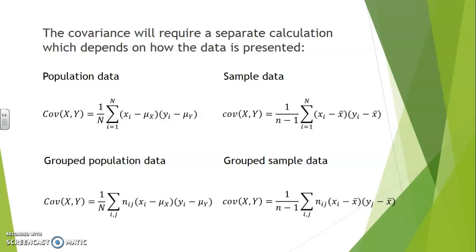The covariance calculation depends on how the data is presented. Data can be presented in listed form for both population or sample data, which doesn't require the frequency or number of repetitions of each observation xi and yi. However, if the population or sample data was grouped in frequency tables, we must take into consideration the repetitions, which is why nij values appear. If necessary, we may even need to replace xi and yi by centers of groups if the variables are continuous.